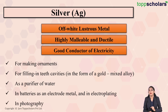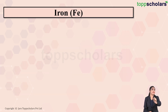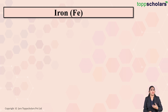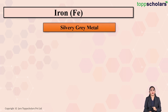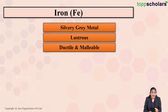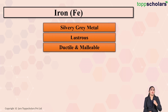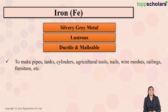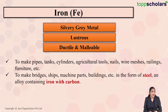Now let's move on to iron. Iron is the most abundant metal found in nature. Iron is a silvery gray, lustrous metal that is ductile as well as malleable — you can draw wires and make sheets from iron. Because of these properties, iron is used for making pipes, tanks, cylinders, agricultural tools, nails, wire meshes, railings, and furniture.